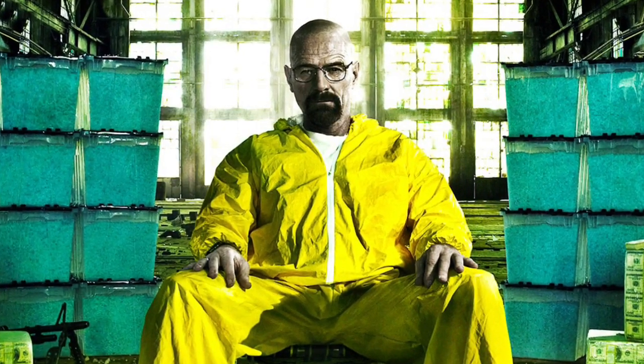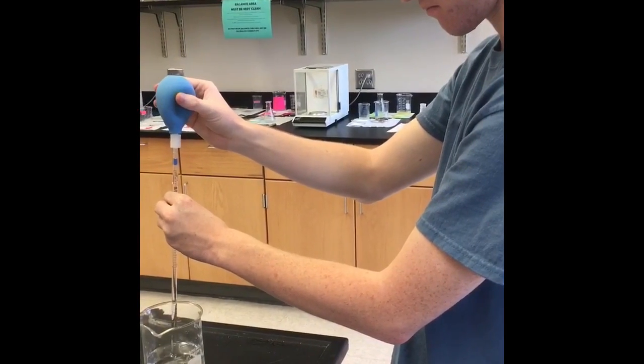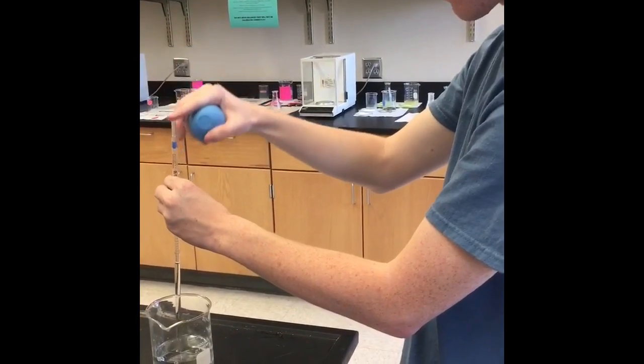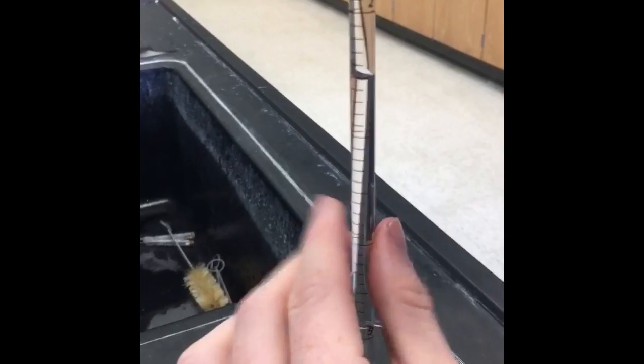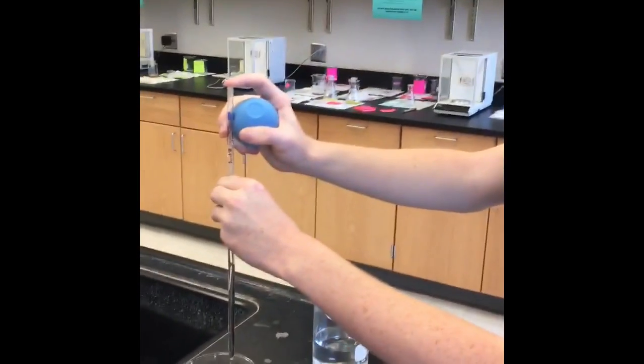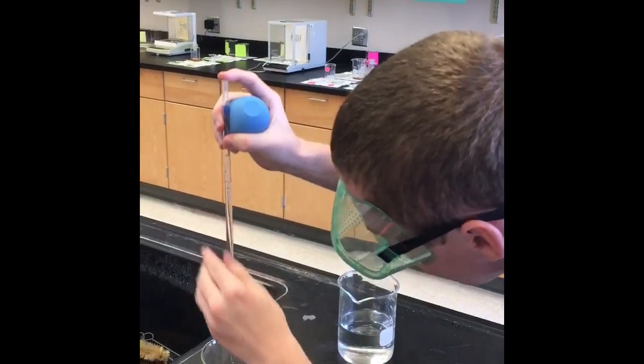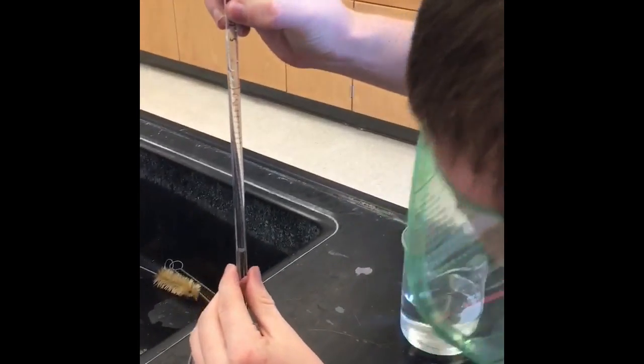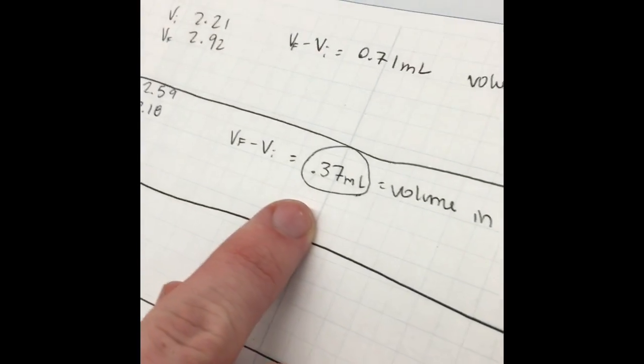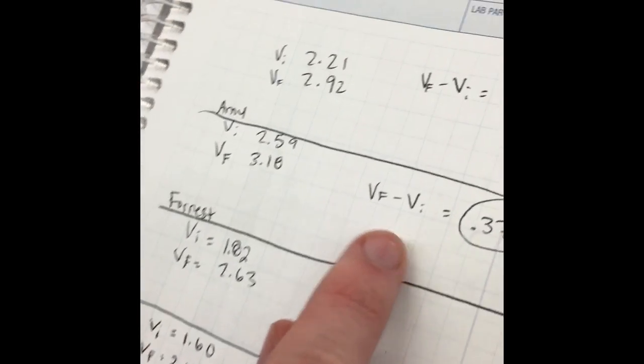Next, we'll look at how Forrest conducts the experiment. The initial volume is 2.59. The final volume is 3.18. The transfer volume is 0.37 milliliters. That is equal to the initial volume subtracted from the final volume.